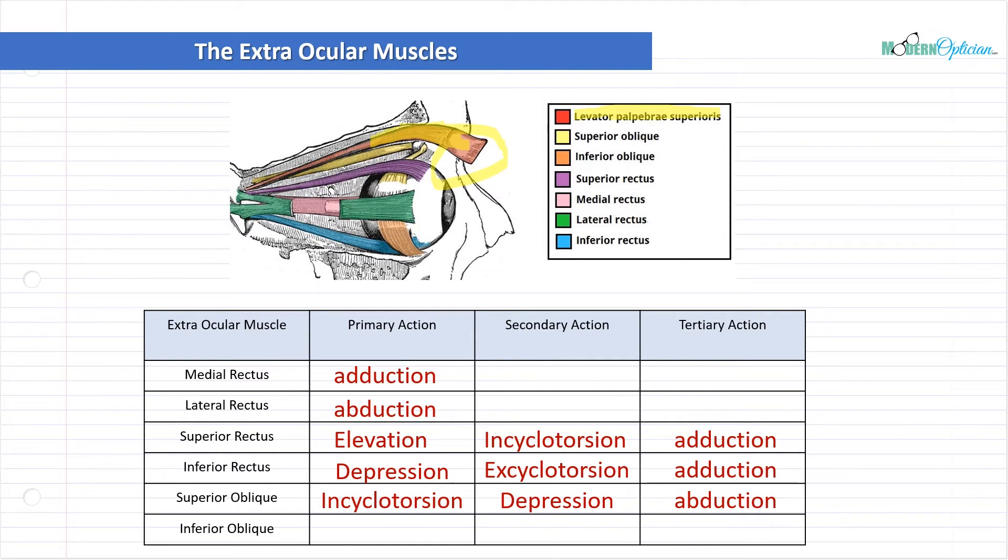The superior oblique is responsible primarily for incyclotorsion, depression as a secondary action, and abduction as a tertiary action. The inferior oblique is responsible for incyclotorsion as a primary action, elevation as a secondary, and tertiary it can do some abduction as well. The medial rectus and lateral rectus just do adduction and abduction, in and out.